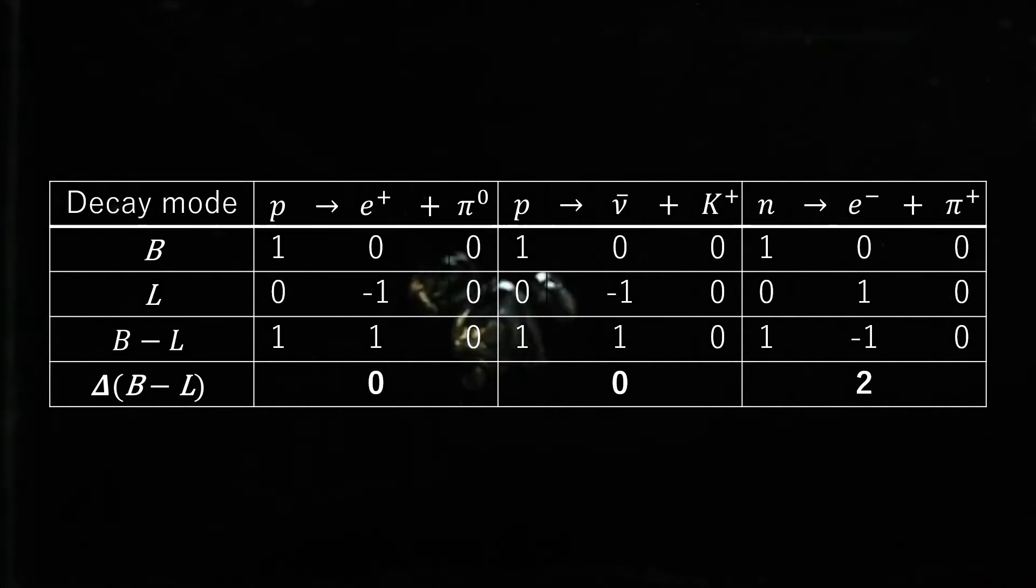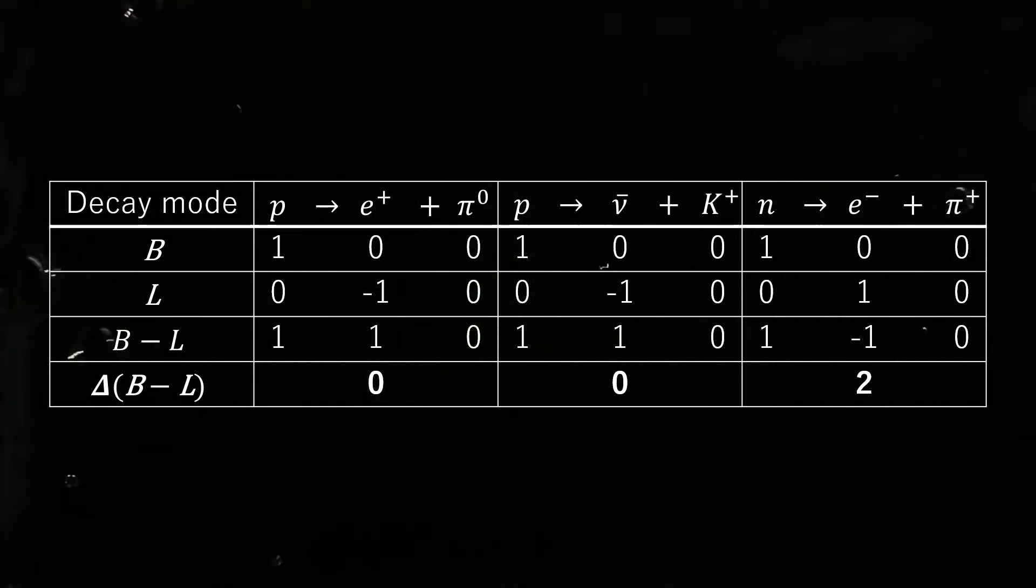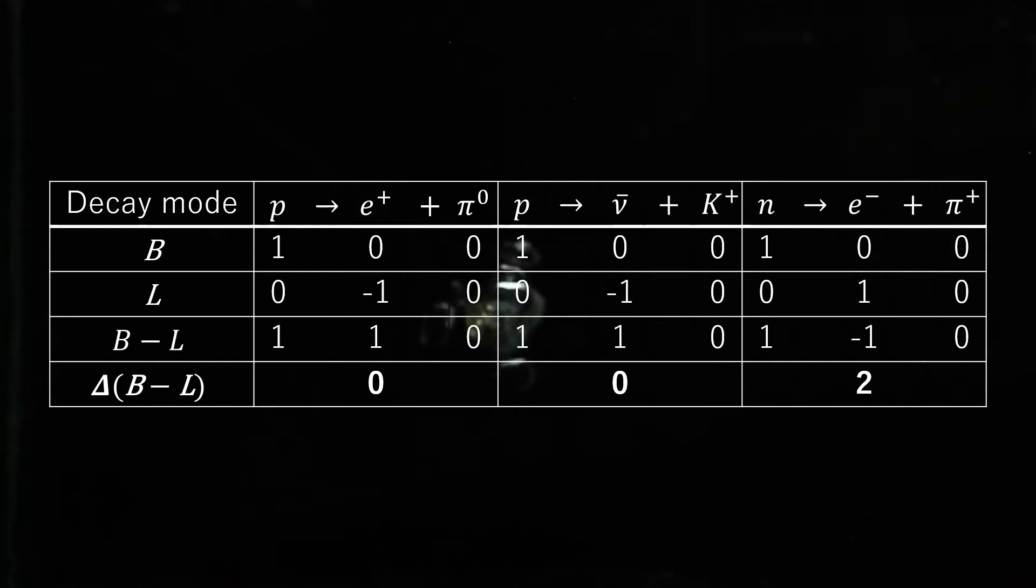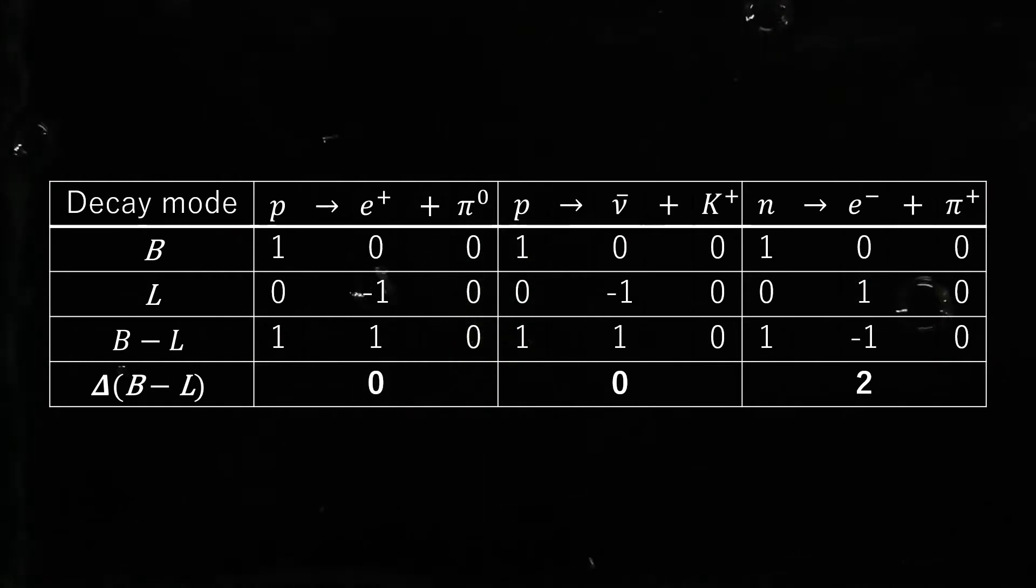In high-energy physics, B-L is the difference between the baryon number and the lepton number. This quantum number is the charge of a global gauge U(1) symmetry in some grand unified theory GUT models.